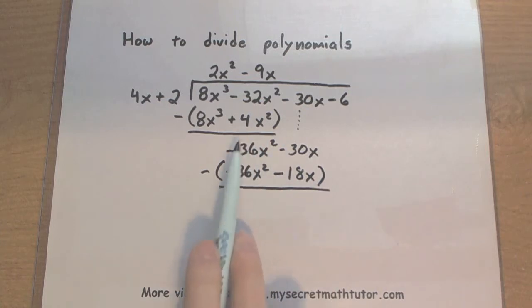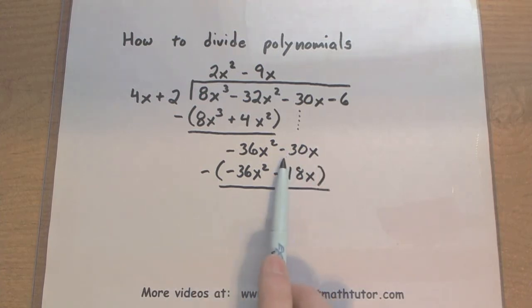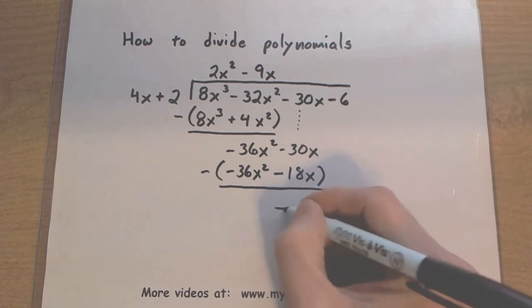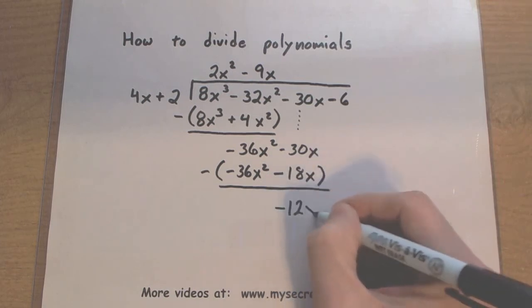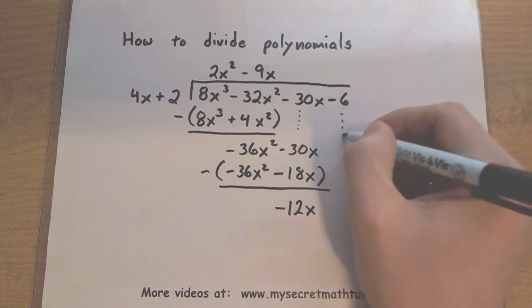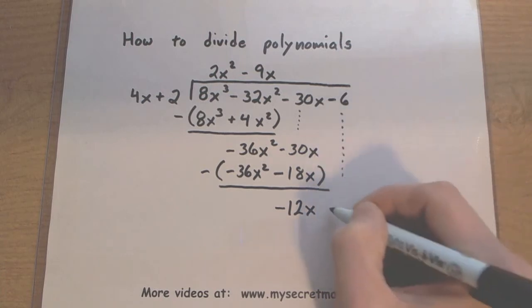Here's where our signs get a little bit tricky. So negative 36x squared minus a minus 36x squared. When you subtract a negative number that's the same as adding. So negative 36x squared plus a 36x squared gives us a 0. Negative 30x minus a minus. So again that's like plus 18. So that will give us a negative 12x. Things are looking pretty good. Let's bring down this negative 6 here.